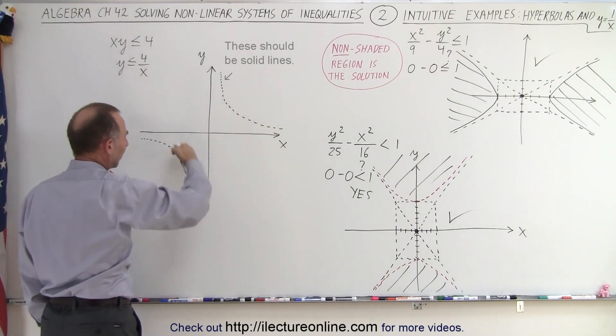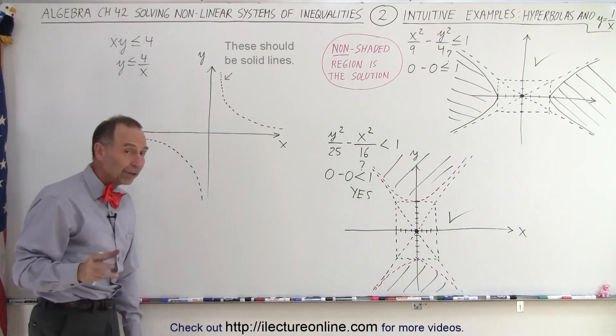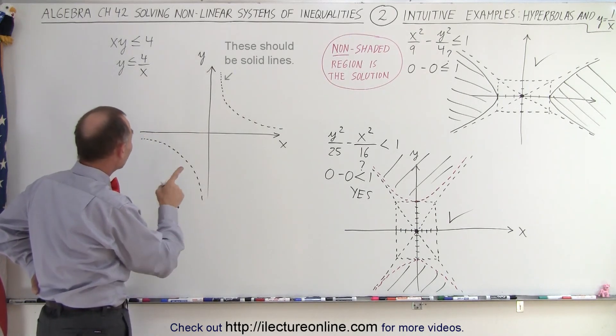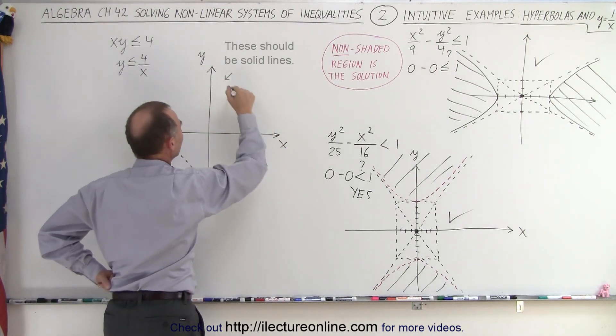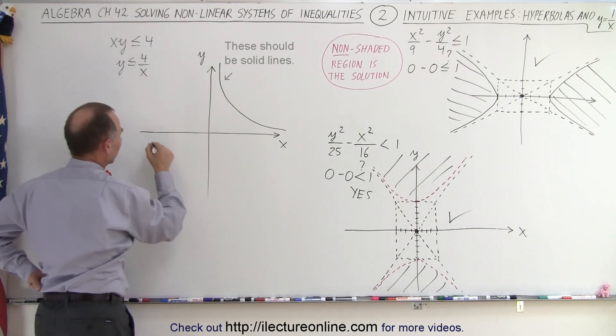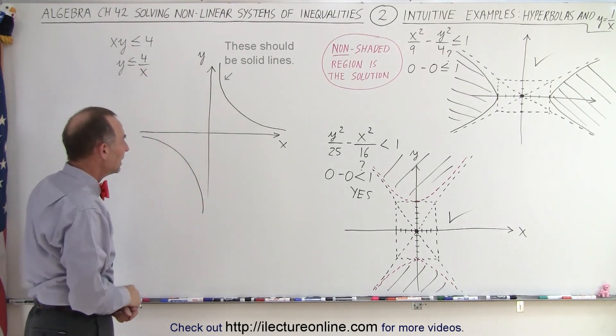Here are the two curves that represent the boundary of that inequality. Notice I drew a dashed line, but I see an equal sign, so it should be a solid line here and here as well, because I included the equal sign.